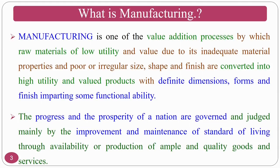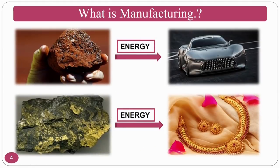The progress and prosperity of any nation is governed mainly by the improvement and maintenance of standard of living through the availability and production of ample quality goods and services. Manufacturing is one of the sources that improves the GDP of any nation and the living standard of the people. Manufacturing converts raw material — for example, bauxite — into a product. Bauxite is used as an ore of aluminum and you can make the body of a car from it. Similarly, gold ore can be converted into ornaments using an external source of energy.